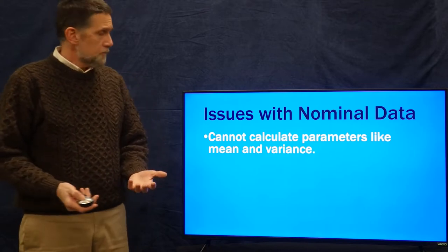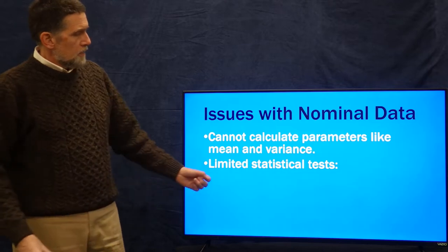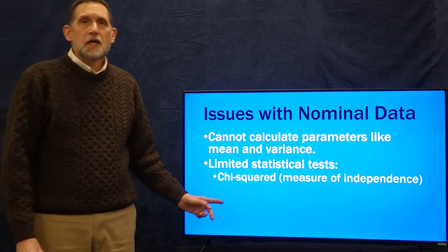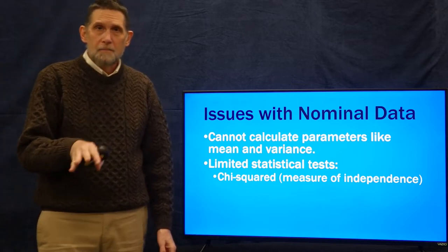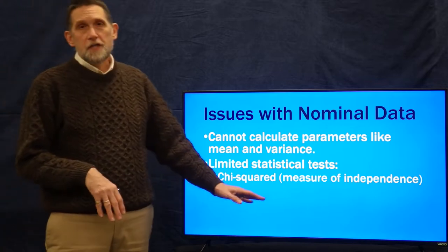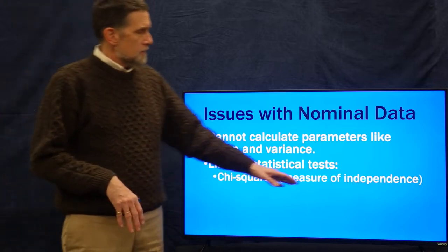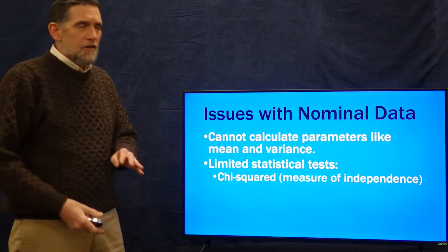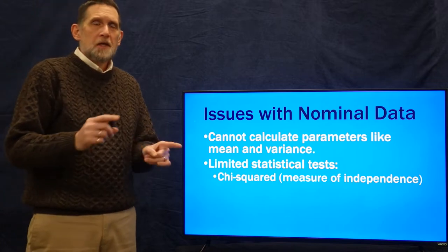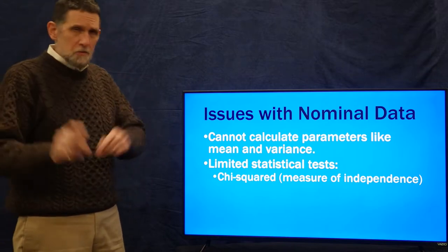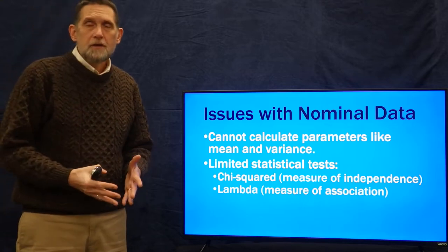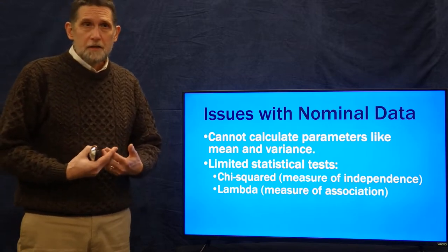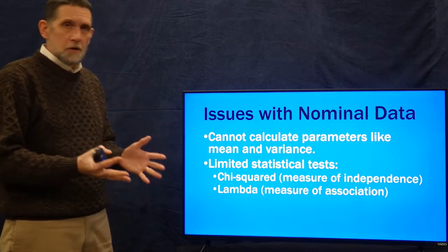So what do we do? We can do a number of very limited statistical tests. The most common one we'll focus on in this lesson is the chi-squared test. It's a measure of independence, and there are two forms of it. One is a measure of fit more than independence. The other is something called lambda, which is a measure of association like correlation but used for nominal data — it varies between zero and one like a correlation coefficient.